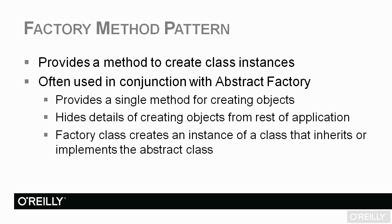A factory method provides a method to create class instances. In the abstract factory, we had different classes inheriting from an abstract class presenting a more generic interface. That was great, but what we didn't have was the creation part. In our application code we had an if-then section: if it's SQL Server, create the SQL Server database class; else if it's Oracle, create the Oracle database class. Doing that throughout the application would be messy. The factory method gives us a nice way of creating those classes and isolating that from the application code, hiding the details of creating objects from the rest of the application.